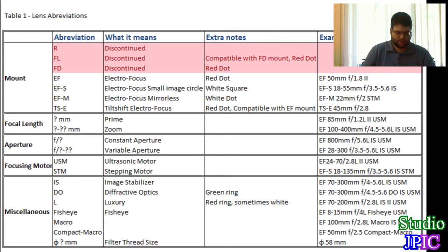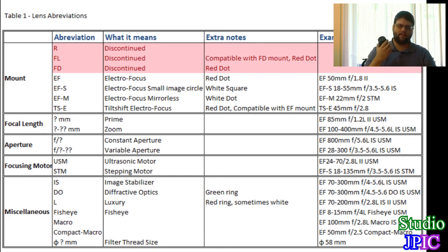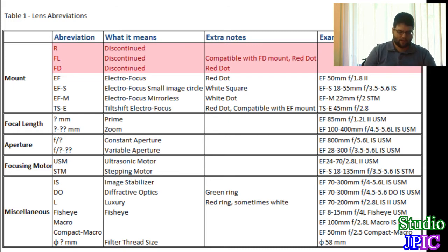Next is the focusing motor. Some lenses will have no mention of a motor, like this one — that's the standard autofocus Canon developed a long time ago. Then you have the more elaborate USM, or ultrasonic motor, which is fast enough that you can barely hear it, operating at ultrasonic frequencies.